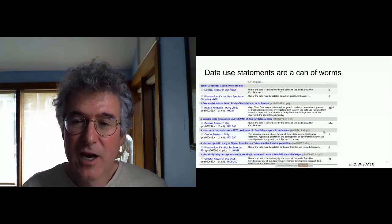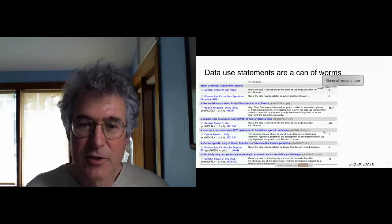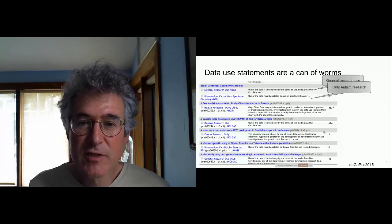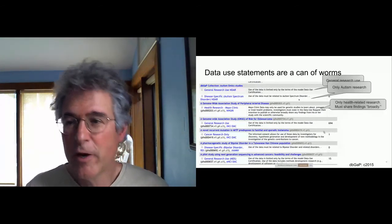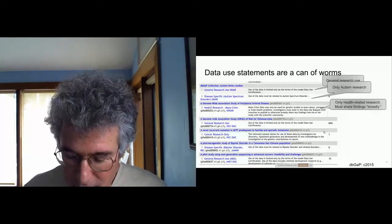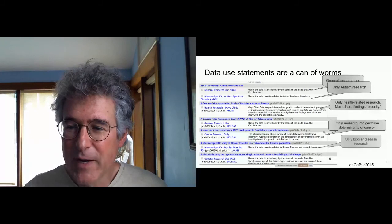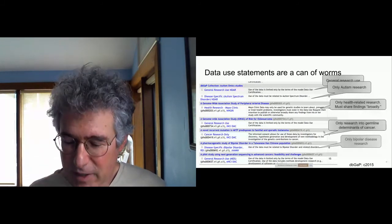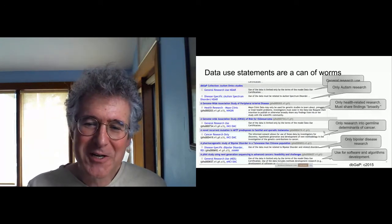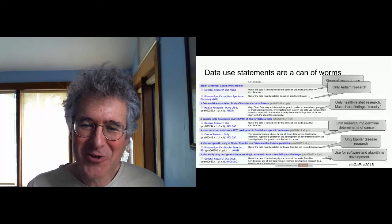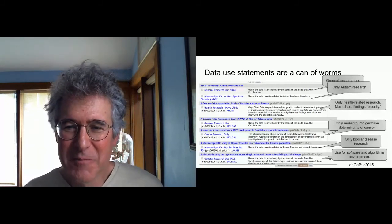This first one is allowed for general research use — whatever you want to do with the data, as long as it's in the interest of science. This one, however, is restricted to research in autism spectrum disorder. This one allows the research but only for health-related research and your findings must be shared broadly. This one is for research into germline determinants of cancer. This one is only for bipolar disease research. And this one is to be used for software and algorithm development, but not for biological research. Now imagine if you're a researcher wanting to combine multiple datasets — how do you intersect all these data use restrictions? If you're a DAC, how do you figure out whether the proposed use meets what was in the consent?